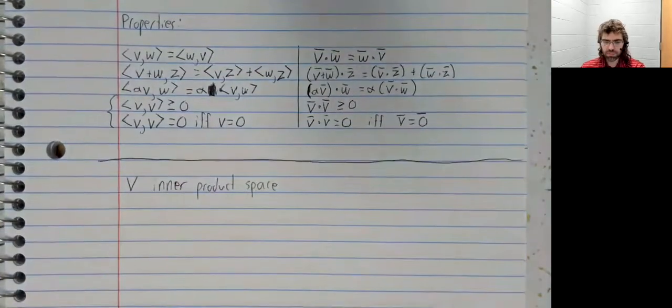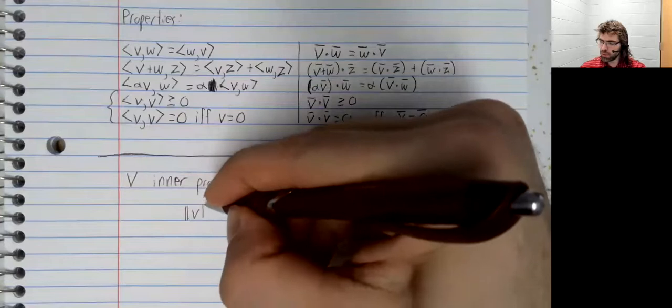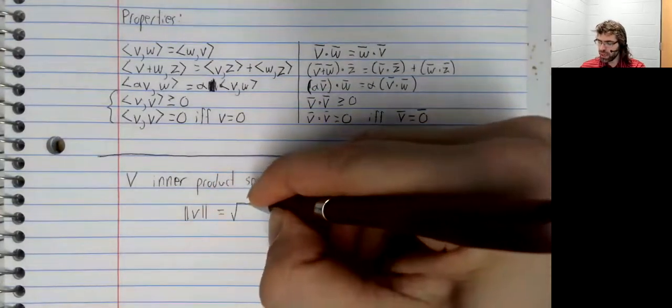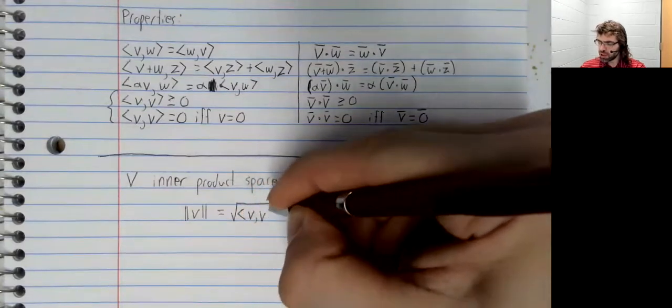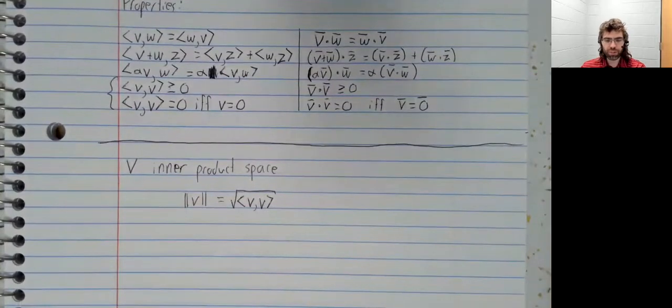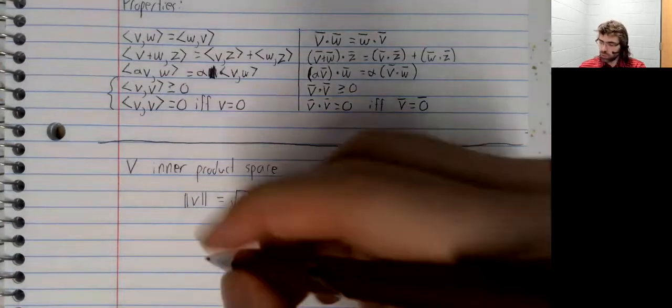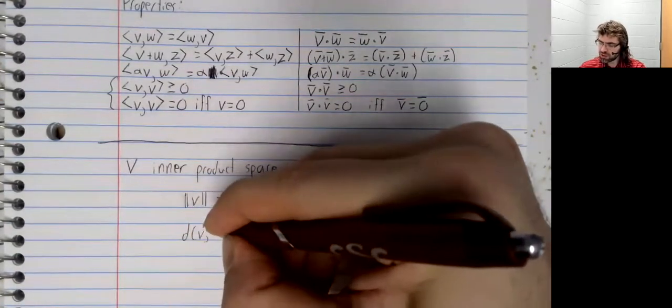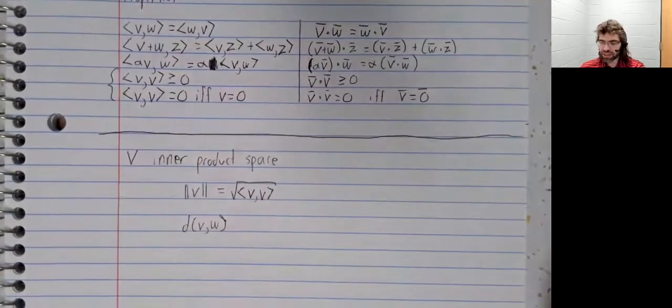So if V is any inner product space, we can define the norm of a vector to be the square root of the inner product of the vector with itself. And once we've defined the norm, we can define the distance between two vectors.